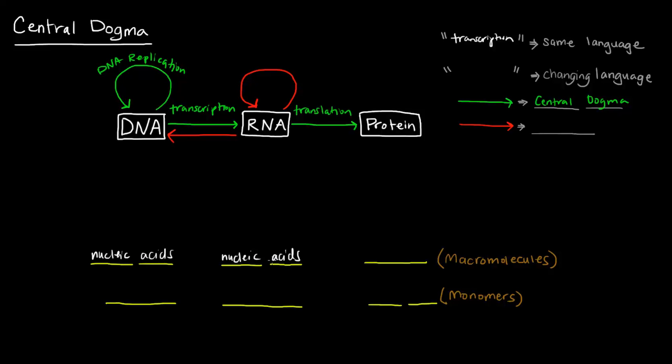Both of them are using nucleic acids, which are the macromolecules. Their monomers are, of course, nucleotides, specifically deoxyribonucleotides in the case of DNA and ribonucleotides in RNA.